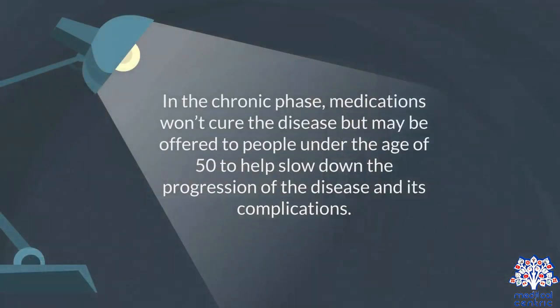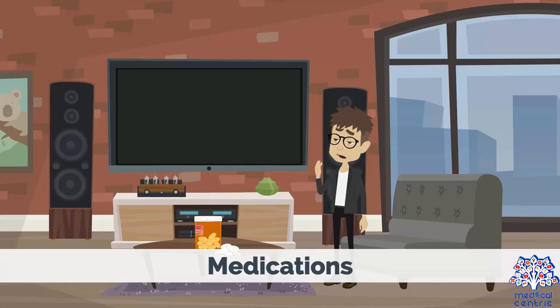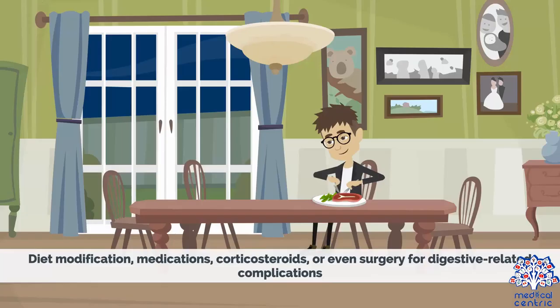In the chronic phase, medications won't cure the disease, but may be offered to people under the age of 50 to help slow down the progression of the disease and its complications. Additional treatment may include medications, a pacemaker or other heart-regulating devices, surgery or even a heart transplant for heart-related complications, diet modification, medications, corticosteroids, or surgery for digestive-related complications.